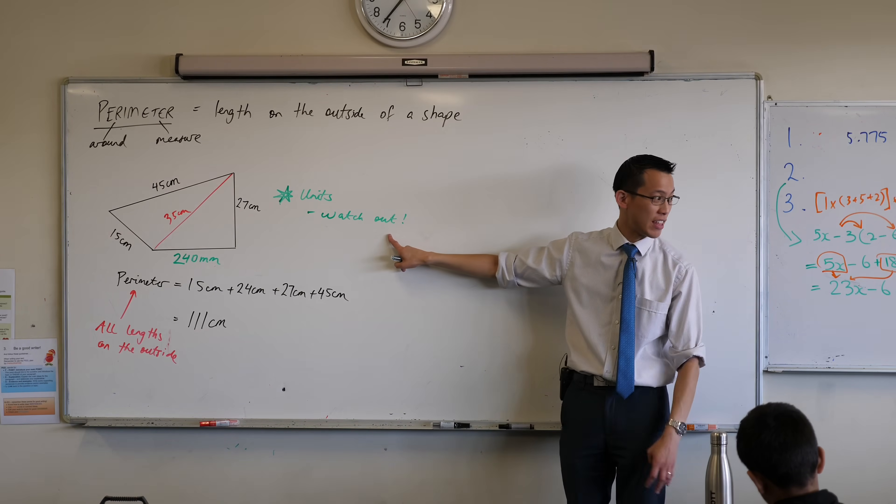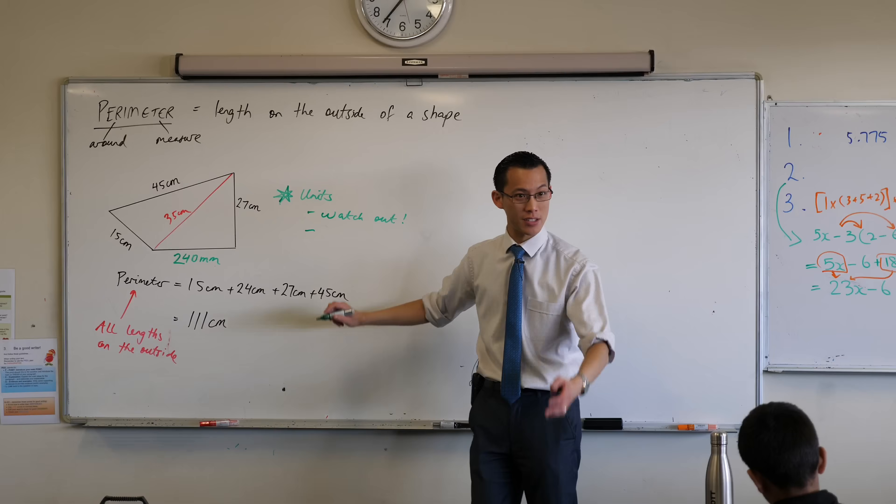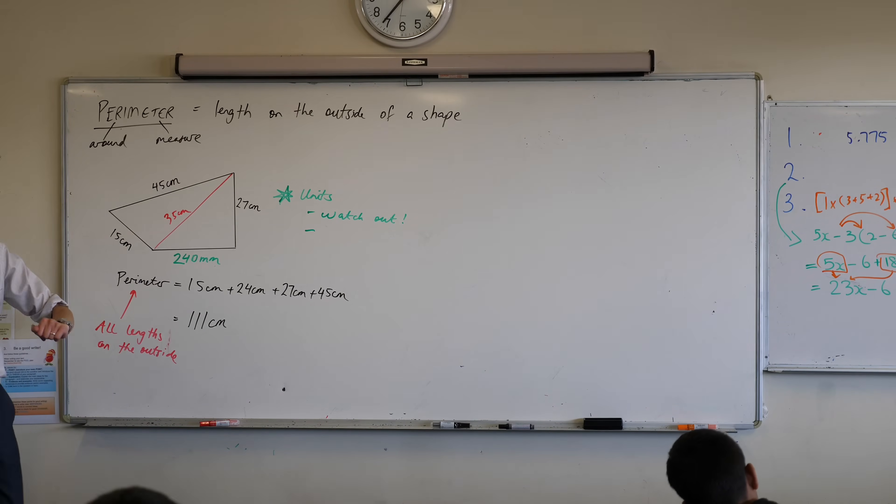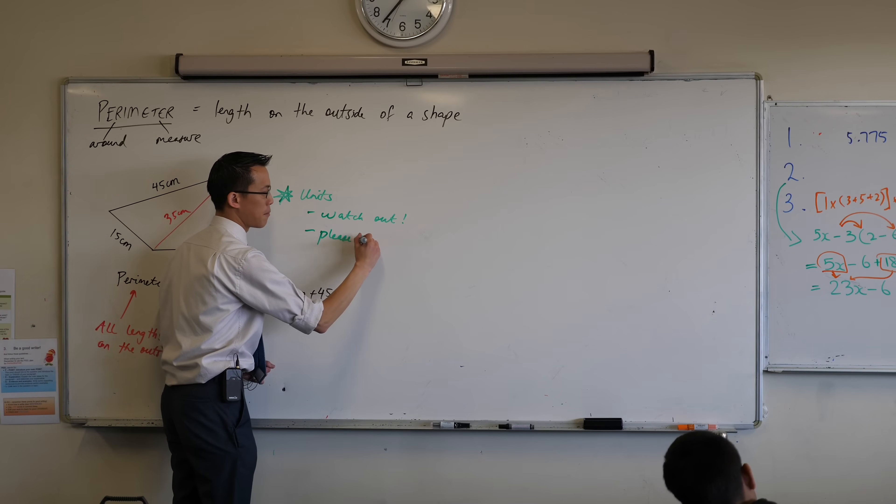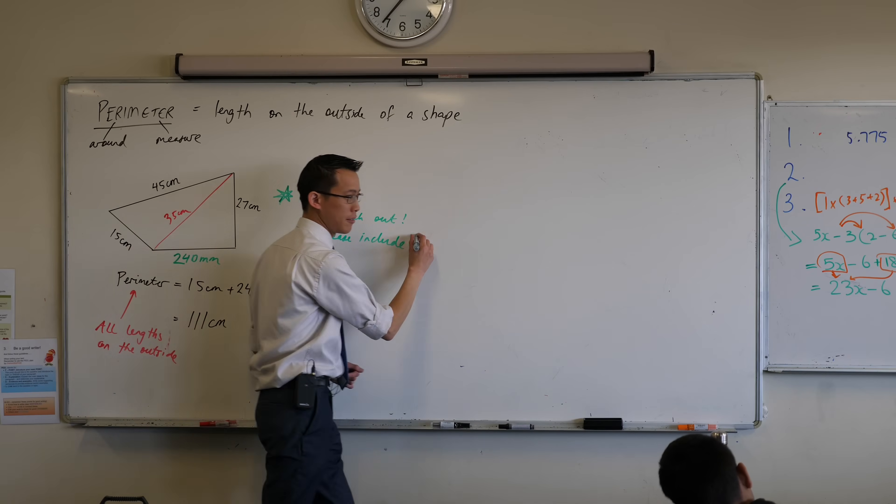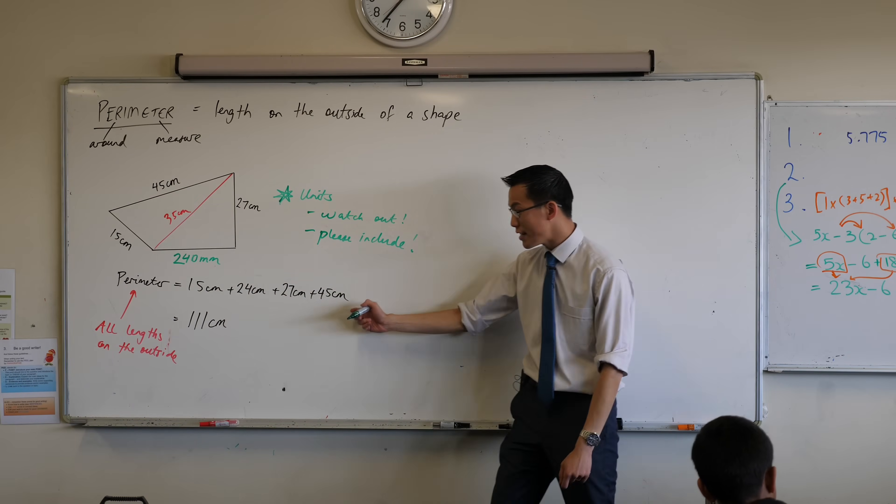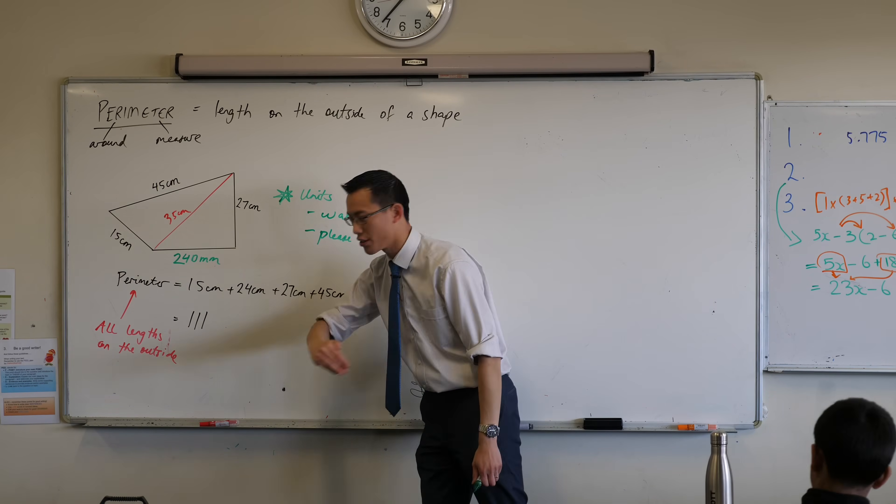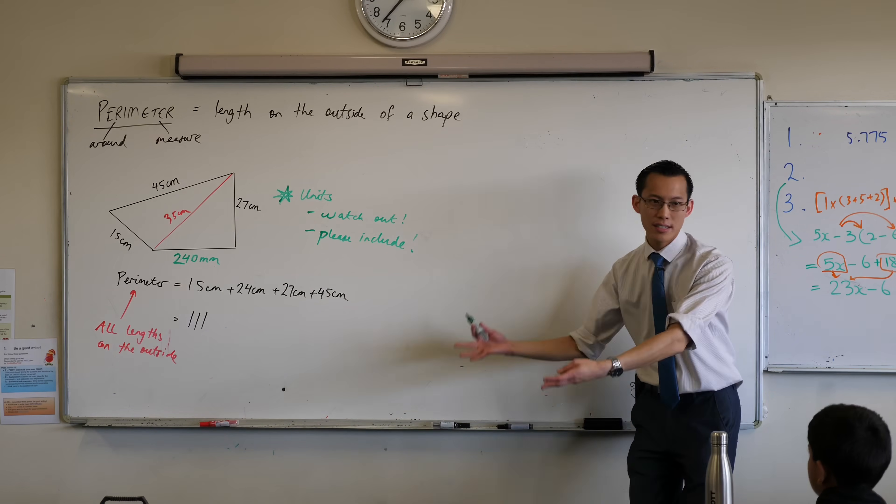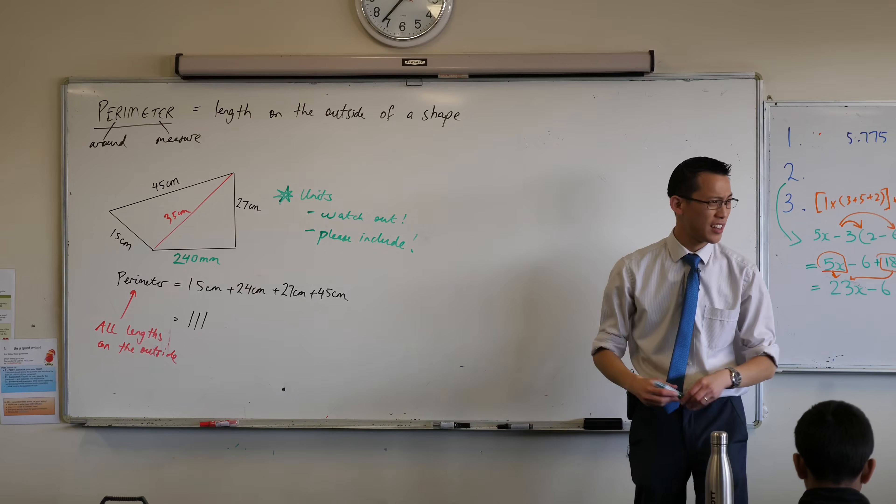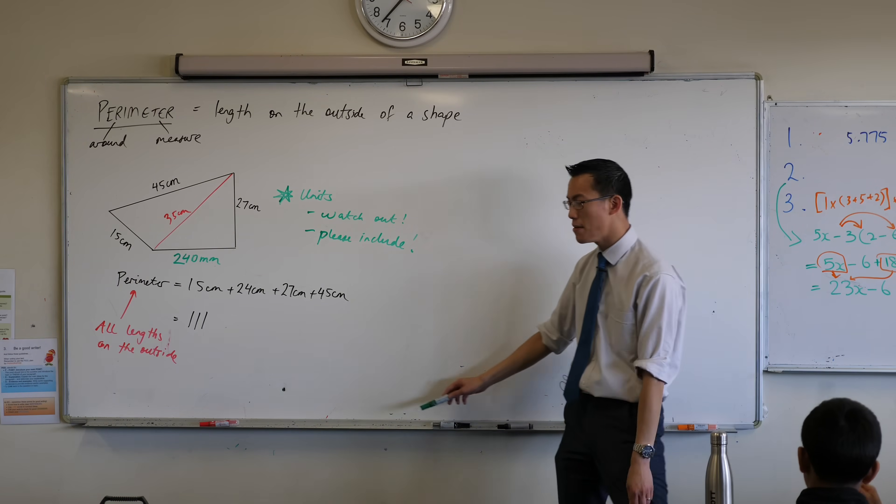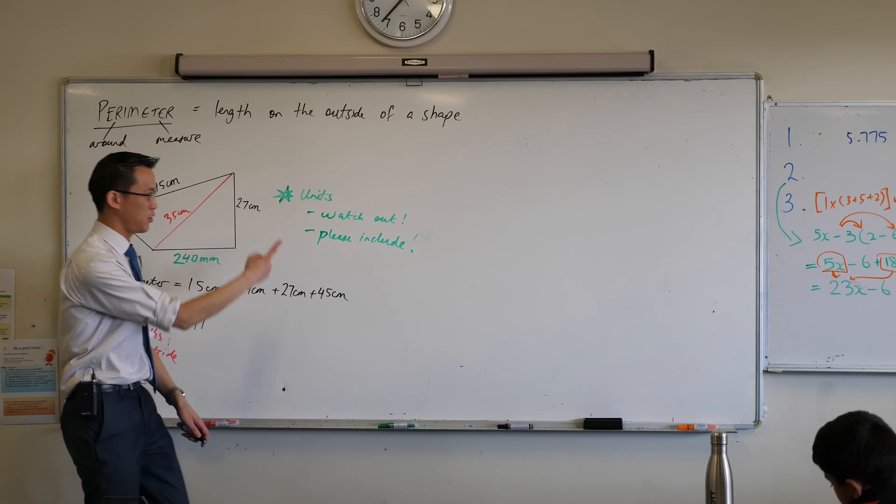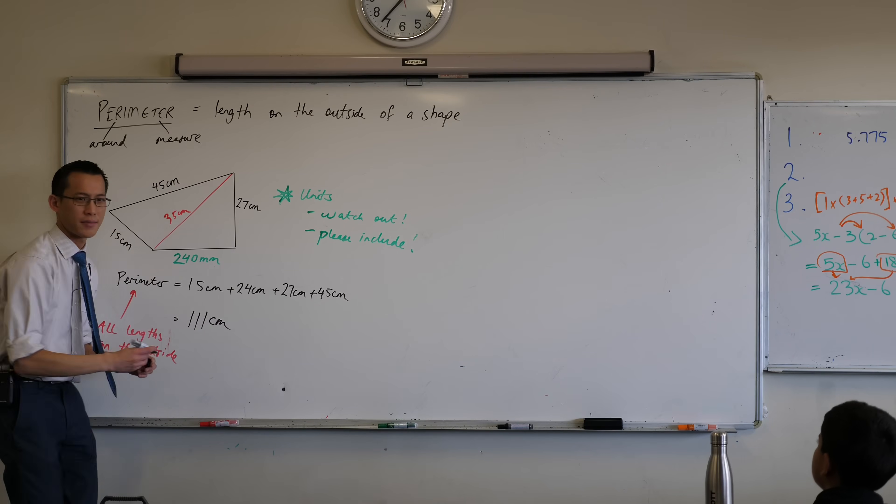So watch out, that they are the same. Sometimes you might need to change them, just like Merrick did with his decimal and his fraction. And the last thing is, please include them. Can you have a look at my answer up here on the board? And notice how I've written the units in here. Right? Had I written my final line as just 111, that isn't the perimeter. Because it could be 111 kilometers or 111 millimeters. The units are really important. So please make sure not only do you watch out for them, but actually include them. Okay?